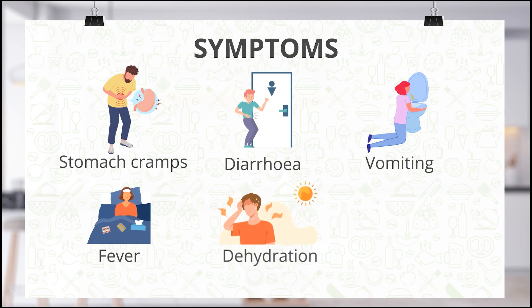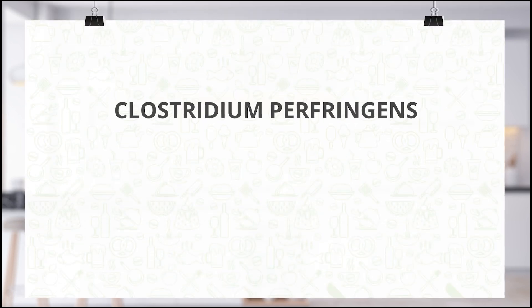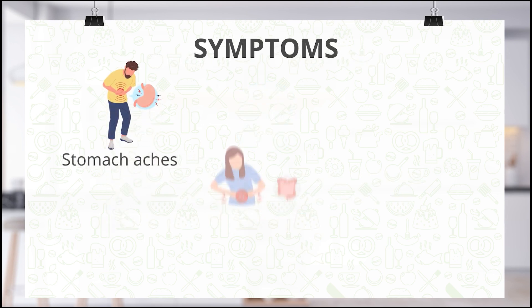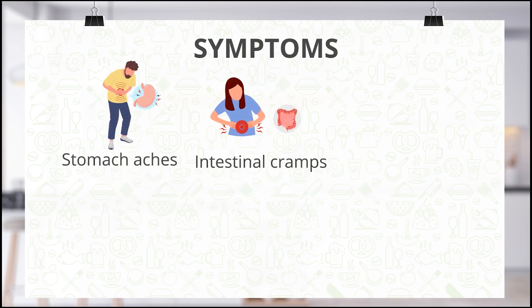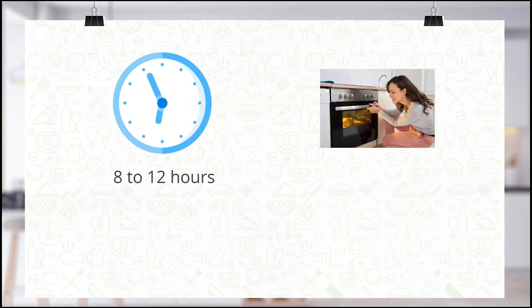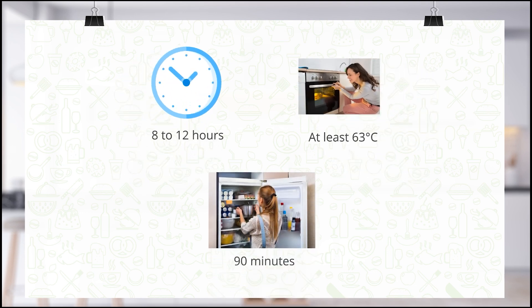Next is Clostridium perfringens. This bacterial illness occurs in the soil and rotting plant matter and can be caused by undercooked meat. Symptoms include stomach aches, intestinal cramps, fever, diarrhea, and vomiting, and it takes about 8 to 12 hours to feel these symptoms. You can prevent this illness by storing food at temperatures of at least 63°C and consuming it within 90 minutes of cooking.